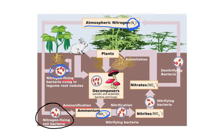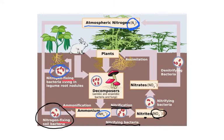Now you have a different set of bacteria called the nitrifying bacteria, and they take the ammonia and through the process of nitrification they turn that into nitrite — nitrite with an I — which is NO2-. And then we have a different set of bacteria called the nitrifying bacteria, and they turn it into nitrate — with an A — which is NO3-.